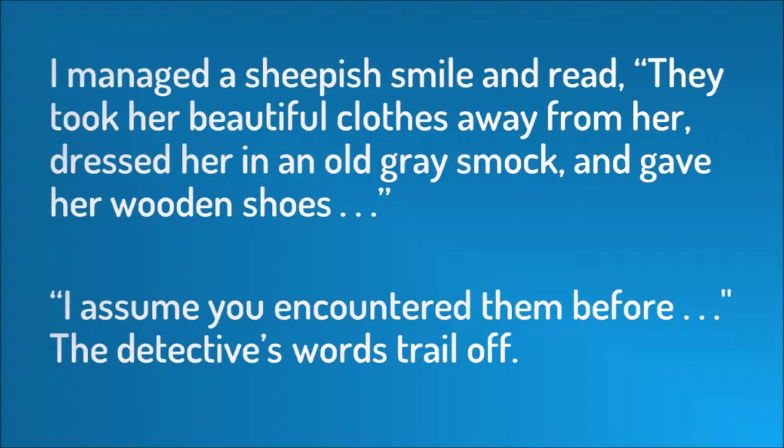Here are two examples of ellipses used correctly in dialogue. First: 'I managed a sheepish smile and read, "They took her beautiful clothes away from her, dressed her in an old gray smock and gave her wooden shoes . . ." I assume you encountered them before.' The detective's words trail off. In the second example, the detective does not complete her sentence — there were supposed to be more words after 'before,' which is why the ellipses works. I follow the Chicago Manual of Style, which means I put a space between each of the periods in an ellipsis. Other style manuals don't do this. Both ways are technically correct, but pick one style guide and use it consistently throughout your book.